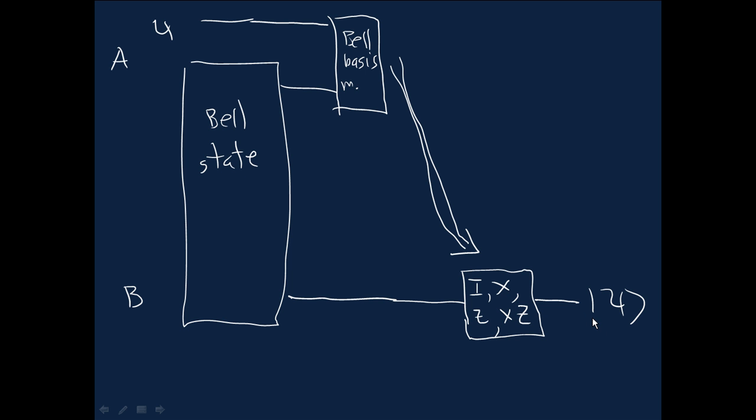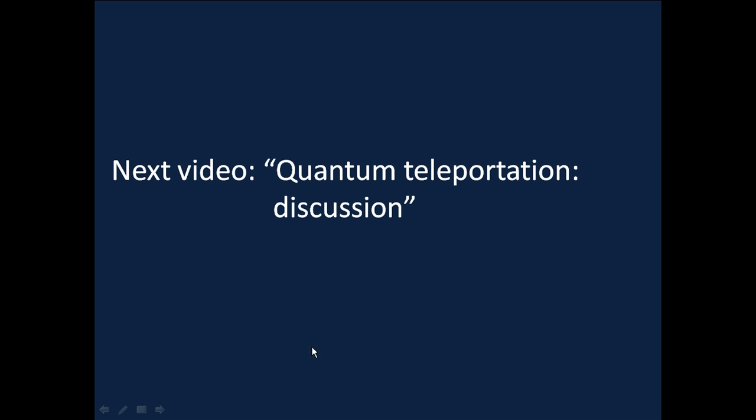So that concludes our discussion of the basic quantum teleportation protocol. We can see why it is that Alice can transmit a state psi over to Bob using nothing, but classical communication and this shared bell state resource. In the next video, what we're going to do once, now that we've understood the basic discussion is, we're going to discuss some interesting aspects and sometimes rather subtle aspects of the quantum teleportation protocol, just to deepen our understanding a little bit of what exactly is going on.